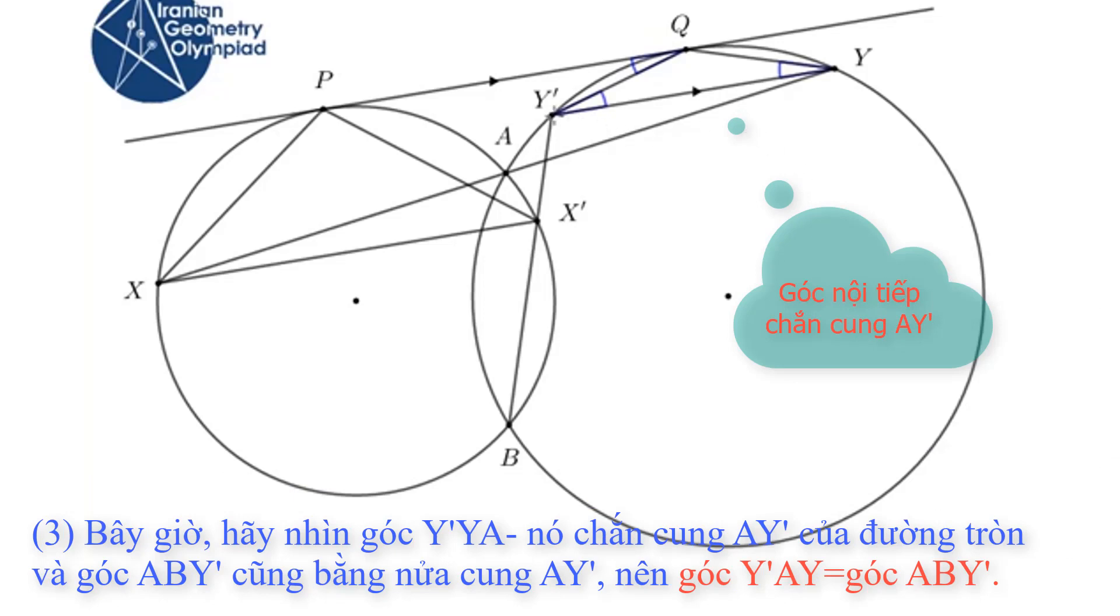Now look at angle Y prime YA. It's half of the arc Y prime A in this circle. And also, angle ABY prime is half of the arc AY prime in this circle.